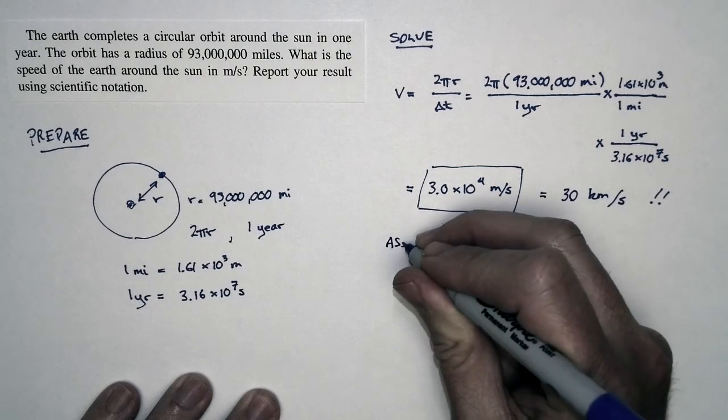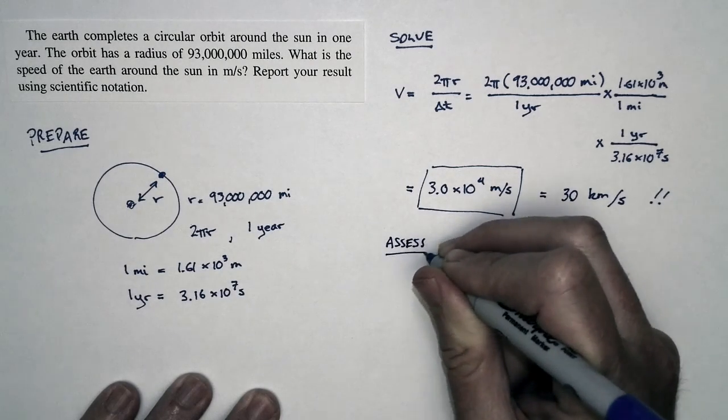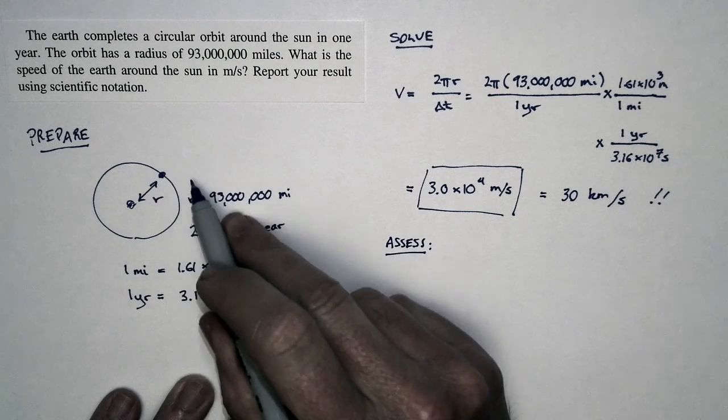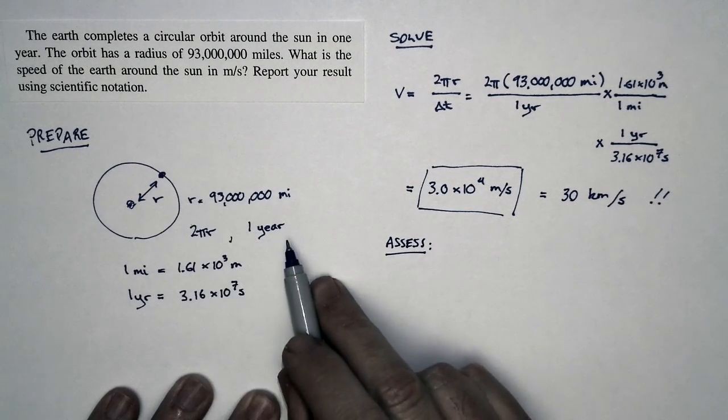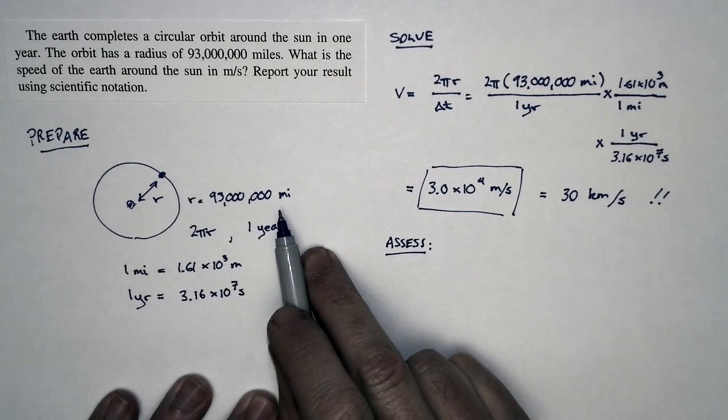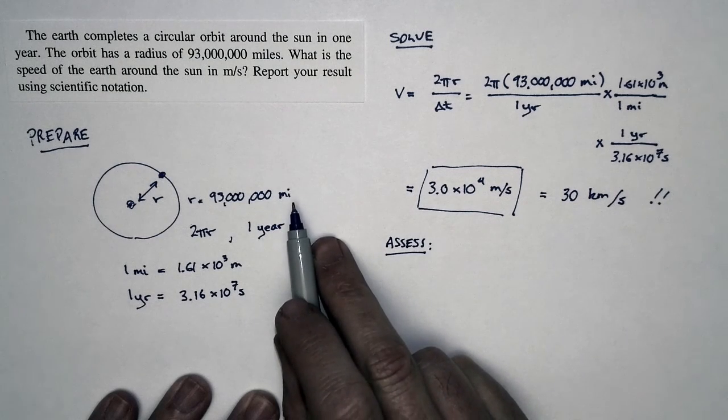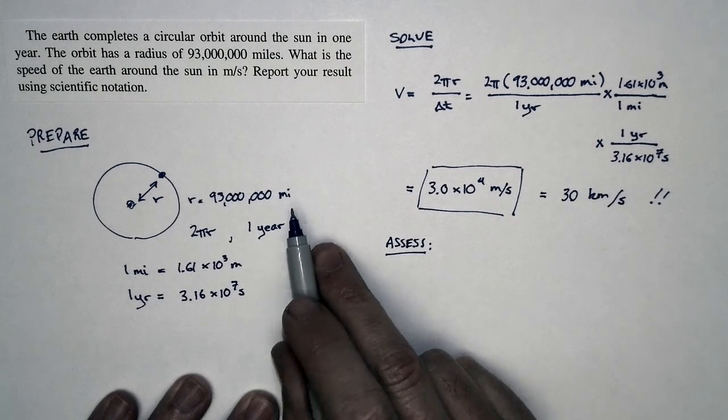But as we assess this problem, think back to what we said at the very start. The Earth is traveling a huge distance during the course of a year. The distance, 93 million miles, is a pretty good distance. We expected the speed to be quite large.